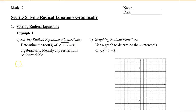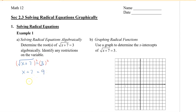So we are going to first rewrite this equation. And then, because I have a square root, the opposite of squaring is to square both sides, so that I can get rid of the radical symbol on the left side. The result will be x plus 7 equal to 9. And then solving for x, I get x equals 2.